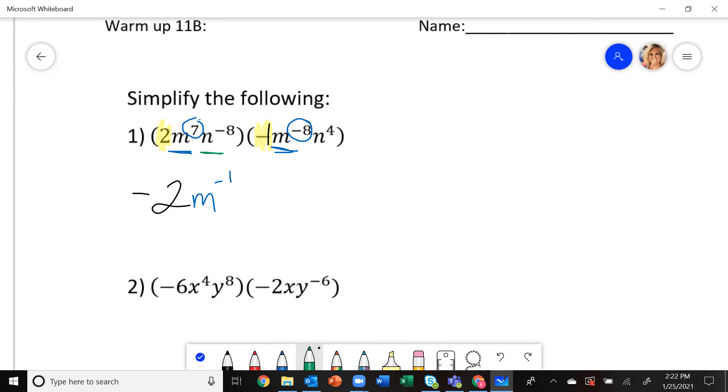Then I'm going to look at the n's and I'm going to add those exponents. Negative eight plus four gives me n to the negative four.